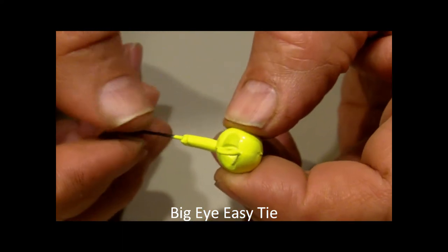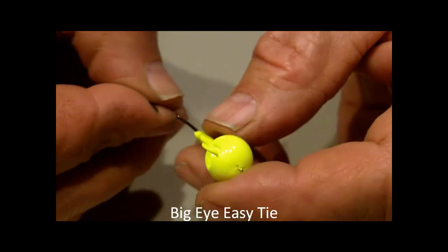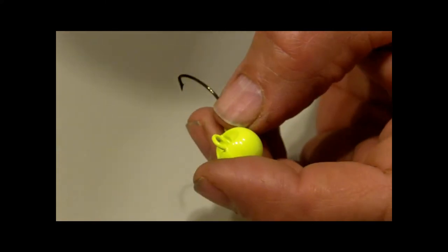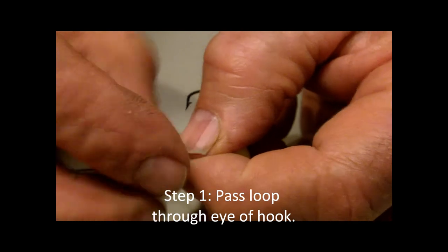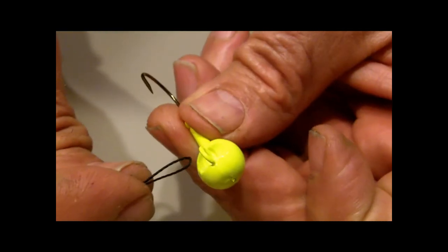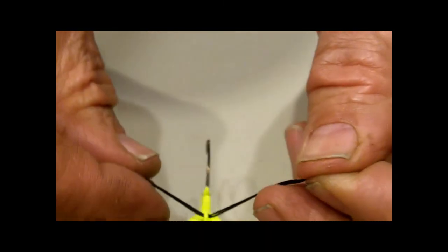So there's really only two things you need to tie a Palomar knot. It's a strong line of your choice and a Big Eye Easy Tie Jig. So here's how you tie that knot. I have here a nice piece of heavy black braided fishing line. You can see, just pass the line through the eye of the jig. Can't get much easier than that.